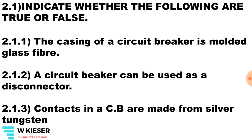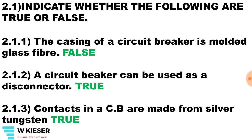Indicate whether the following are true or false. The casing of a circuit breaker is molded glass fiber — that is false; it is usually made out of bakelite. A circuit breaker can be used as a disconnector — that is true. Contacts in a circuit breaker are made from silver tungsten — that is true.